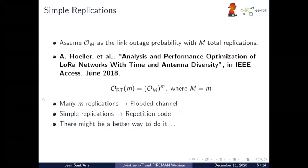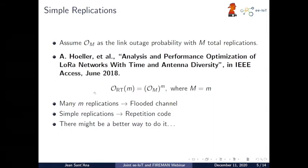So we're seeing a case where one device wants to transmit one message — instead, it will transmit the same message M times. As a result, he states that with a higher number of M, we may flood the channel. With a higher number of replications, the outage would be higher. At the beginning we can decrease the outage probability, but eventually this number inside the parentheses grows and we get worse results. He states there is an optimal number of replications. We can see this as a repetition code, and from the literature we know there might be better coding schemes than simple repetition codes.